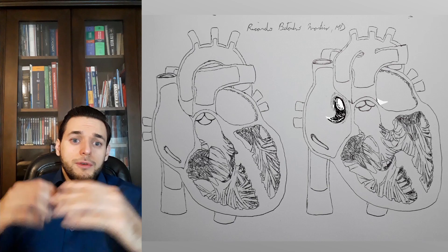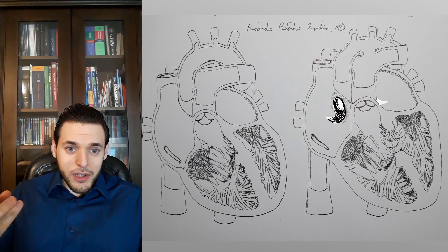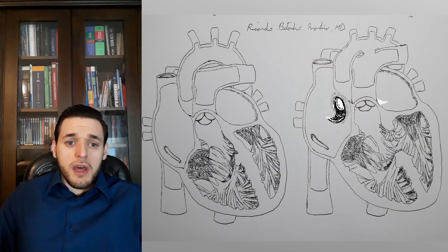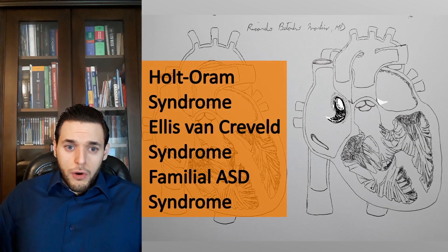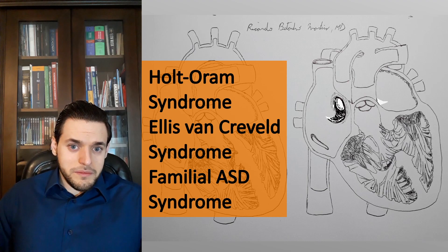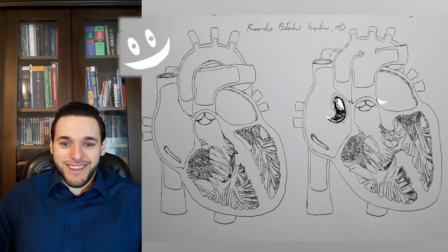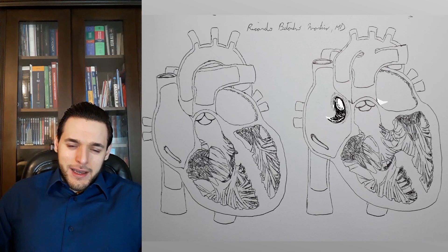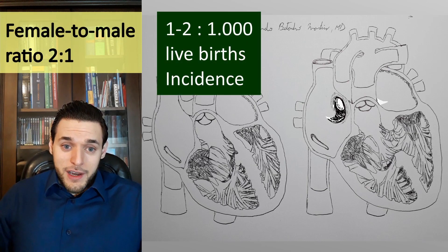Overall, atrial septal defects are associated with a multitude of gene defects that control cardiomyocyte growth and differentiation during atrial septum formation. Consequently, ASD is associated with multiple syndromes such as Holt-Oram syndrome, Ellis-van Creveld syndrome, and familial ASD syndrome. ASD is twice as common in women than in men, and its incidence is 1 to 2 per thousand live births.